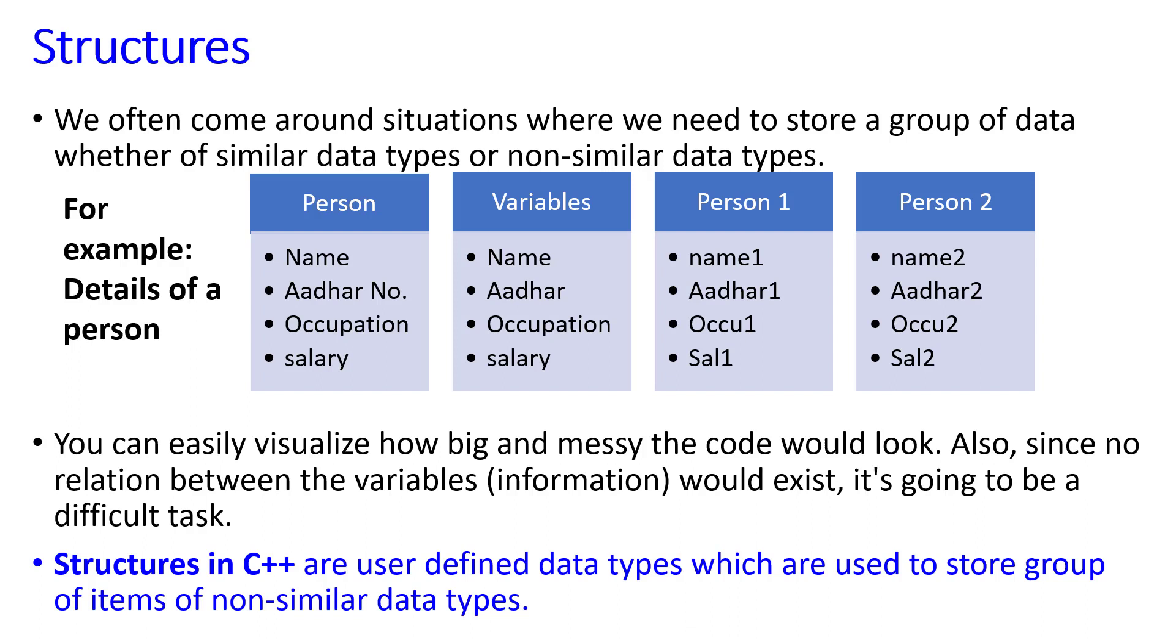You can easily visualize how big and messy the code would look if you're not arranging it properly. Also, since no relation between the variables would exist, it's going to be a difficult task. Structures in C++ are user-defined data types which are used to store groups of items of non-similar data types.